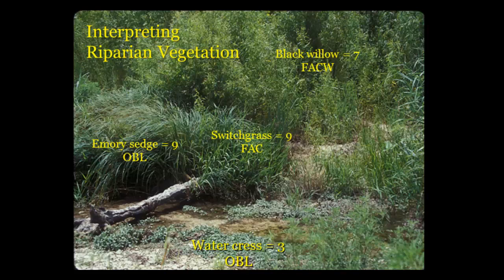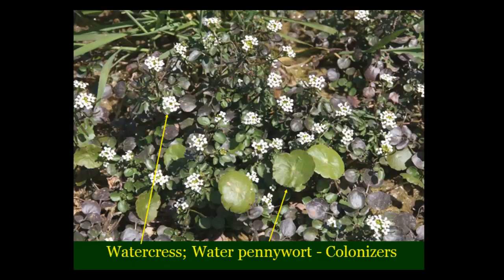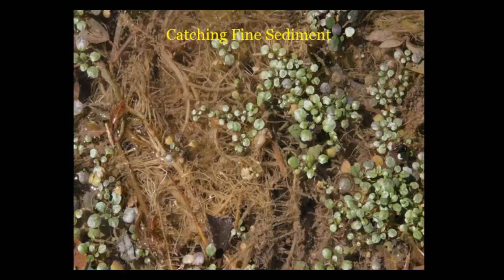I'm going to show you some examples of plants we encounter in central Texas — most of my experience is west of here, more in the hills. Here's a picture of some colonizers: watercress and water pennywort. They're weak-rooted but spread very quickly — they cover that bare ground. That's their job. They catch very fine sediment that flows through and set the stage for the growth of the stronger stabilizer plants.